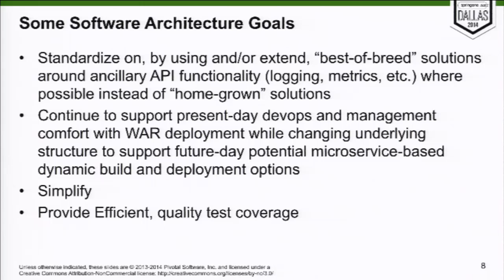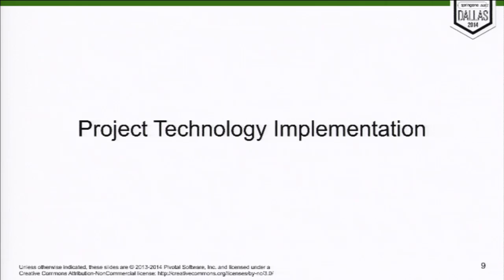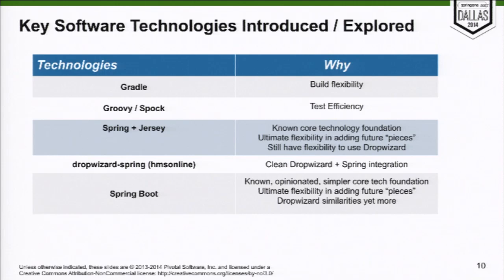Some of the architecture goals we have include using best-of-breed solutions and dealing with present-day DevOps. We see Netflix OSS and some great things they're doing — we're not there in an enterprise situation, but we're trying to move towards a more modular and microservice-based architecture. It takes longer than it should — that's just the reality. Having a core technology that helps with that migration path is appealing. Secondary goals include simplifying as we add more components, reducing lines of code, reducing complexity, and increasing test coverage.